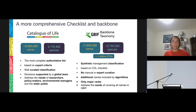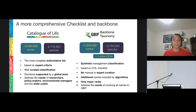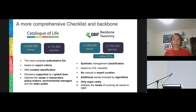The CoL checklist is a complete authoritative list with a well-curated classification, as Olaf just presented. It is also a robust and reliable source that covers the needs of researchers, policymakers, and the general public. In contrast, the GBIF backbone has a larger list of names, organized in a synthetic classification that is useful mainly for practical management. However, even though it is based on the CoL checklist, it also includes names that are continually added only by algorithms.